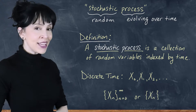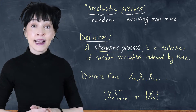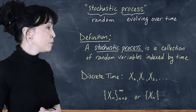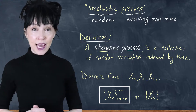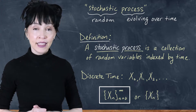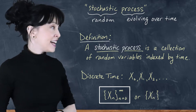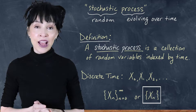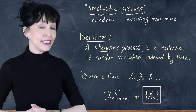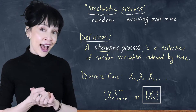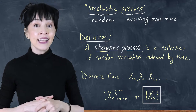If I write X sub n, I'm referring to the random variable which represents the value of the process at time n. But if I write X sub n with brackets around it showing n goes from 0 to infinity, then I mean the entire collection or stochastic process. And if I write X_n with brackets but don't write the indices, that just means I'm being lazy, but it still refers to the entire stochastic process as opposed to the random variable that is the value of the chain at time n.